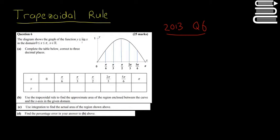The diagram shows the graph of the function y is equal to sine x. So that's the start of y equals sine x. If you remember, that's kind of a wave function in the domain 0 to x to π. So that just means that between 0 and π, we have the sine curve. Complete the table below, correct to three decimal places. So if x is equal to 0, π over 6, π over 3, π over 2, and so on, what is y equal to?